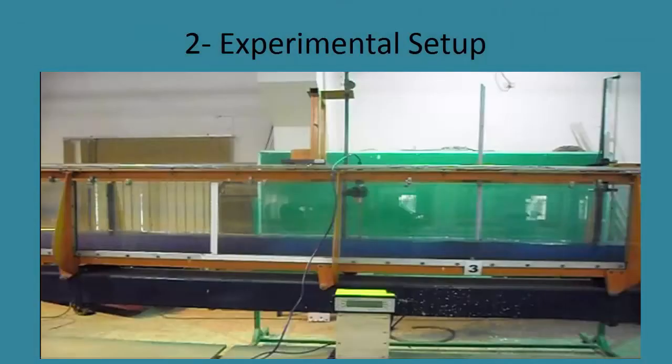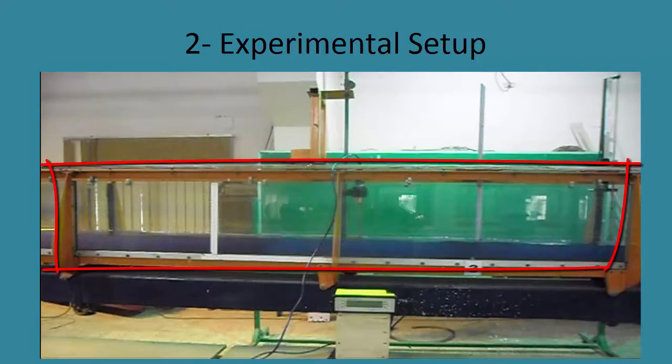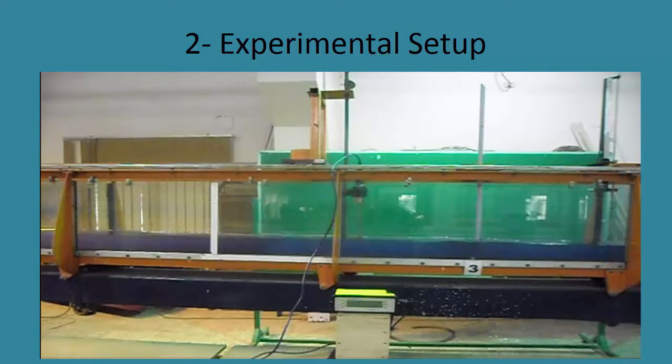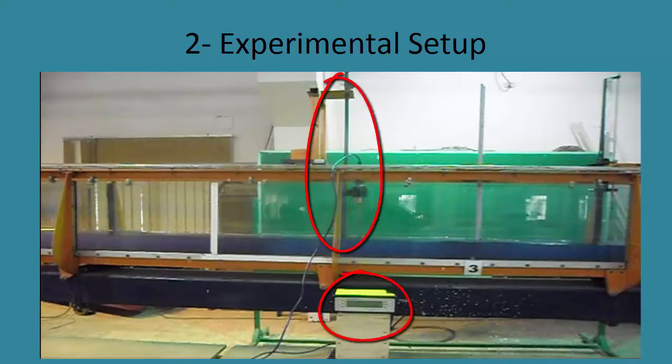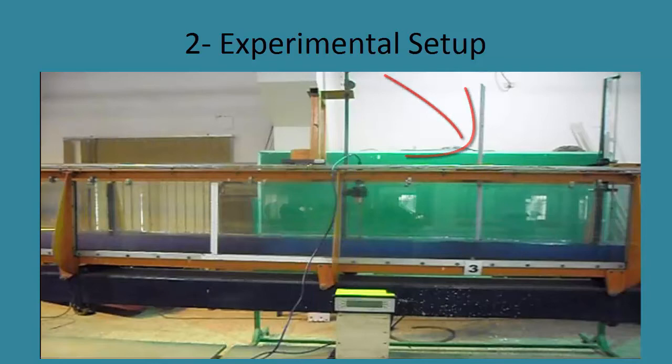This experiment was done in the hydraulic lab at Faculty of Engineering Cairo University. We use a channel flume by which we control flow and slope, and we measure water level using this point gauge. We choose a reach to be studied. To measure velocities, we use this electromagnetic current meter. Finally, we use Preston tube to measure velocity head.